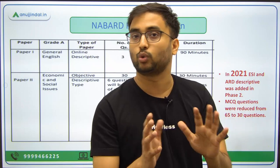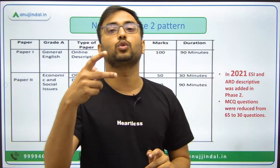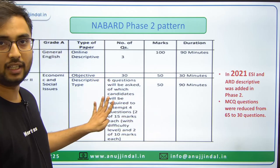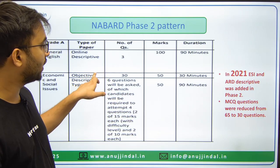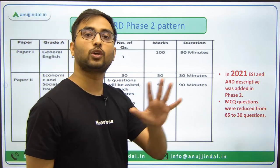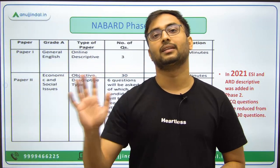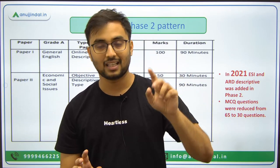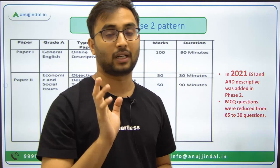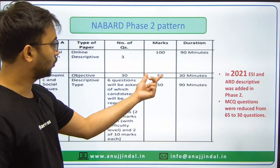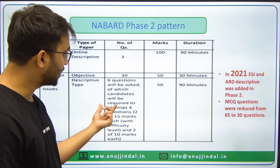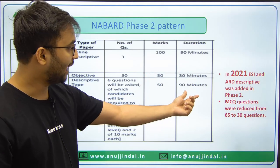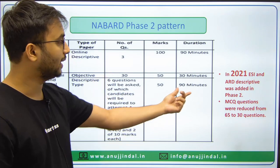For ARD, the first question is compulsory for 15 marks and the next two are for 10 marks each. Similarly for ESI, the first question is compulsory and the next two are for 10 marks. So you solve the compulsory question and pick any one from the remaining two in each section. Objective questions are also there: 30 MCQs total — 15 from ARD and 15 from ESI. In each section, 10 questions are for 2 marks and 5 questions are for 1 mark, making 50 marks from MCQs. Descriptive is also for 50 marks. MCQ timing is 30 minutes and descriptive is 90 minutes.